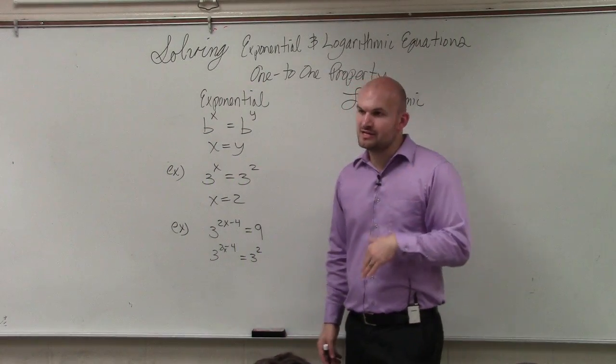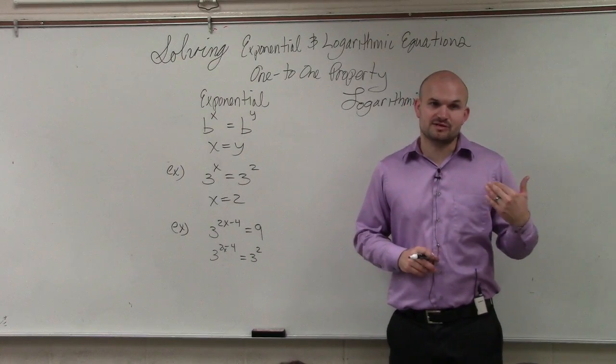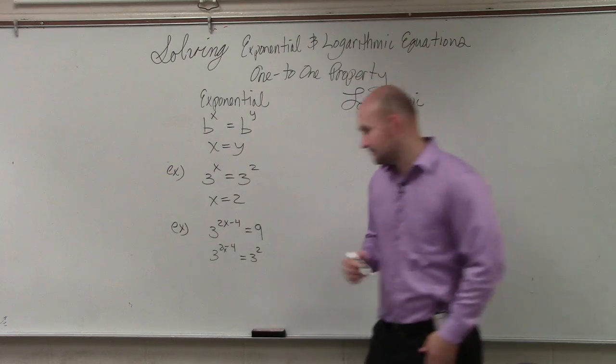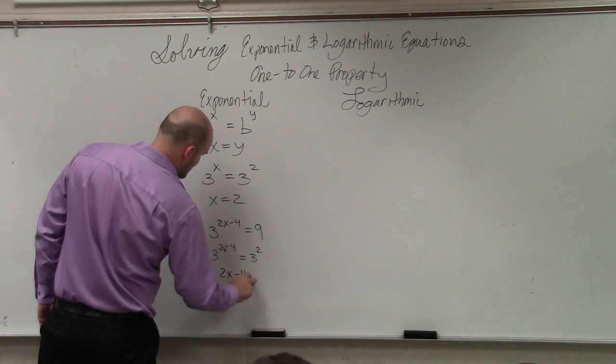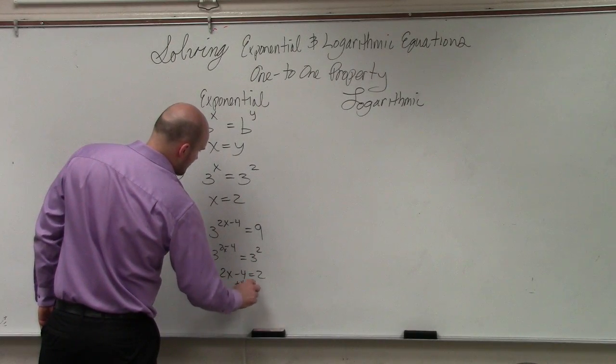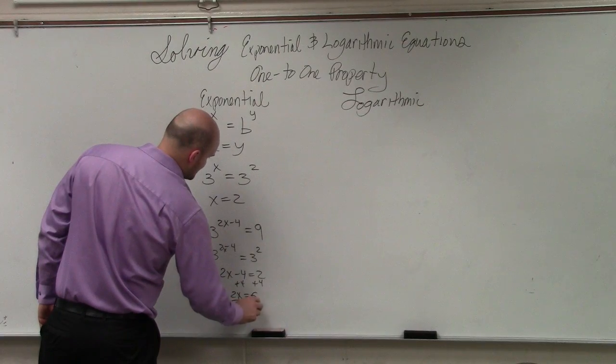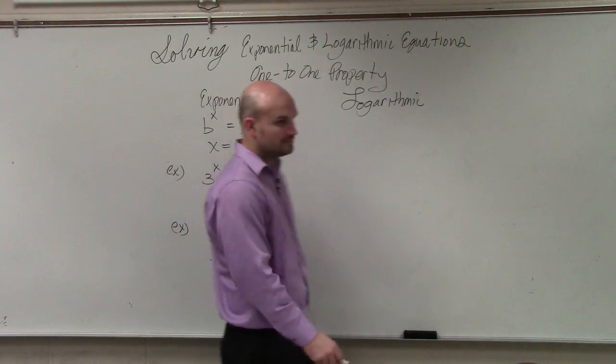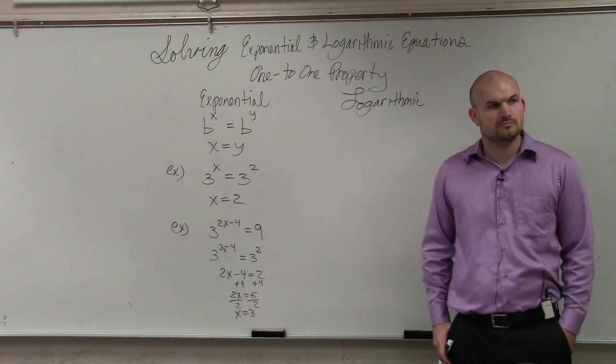So if we manipulate the equation a little bit and set that equal, instead of writing 9, we write that as 3 squared, now we can apply the one-to-one property. So I'd have 2x minus 4 equals 2, plus 4, plus 4, 2x equals 6, divided by 2, divided by 2, x equals 3. Does everybody see how the one-to-one property can work?